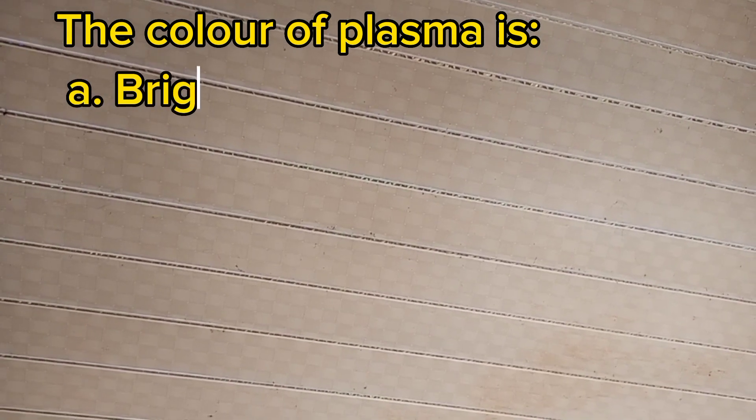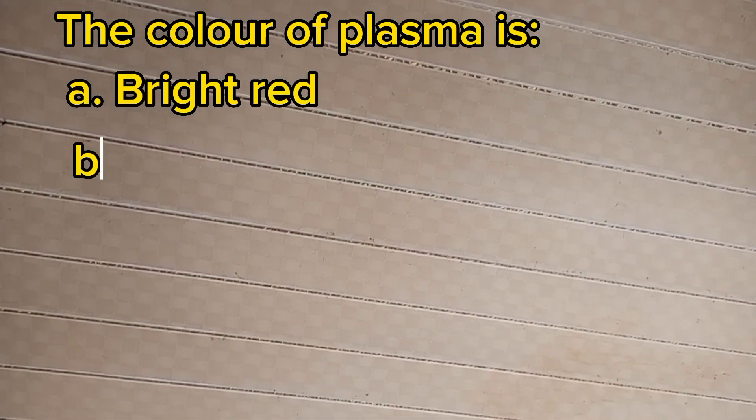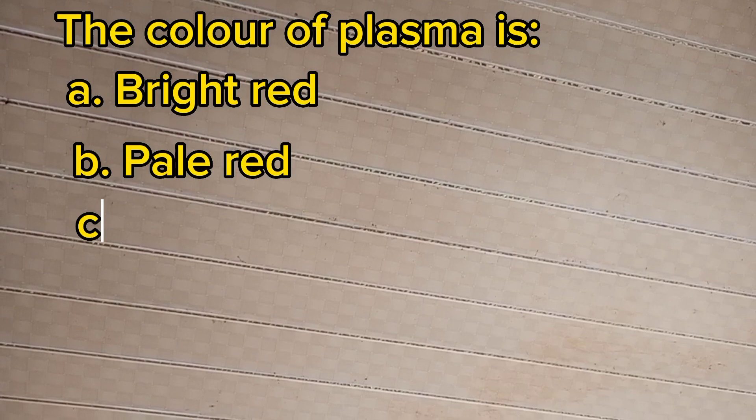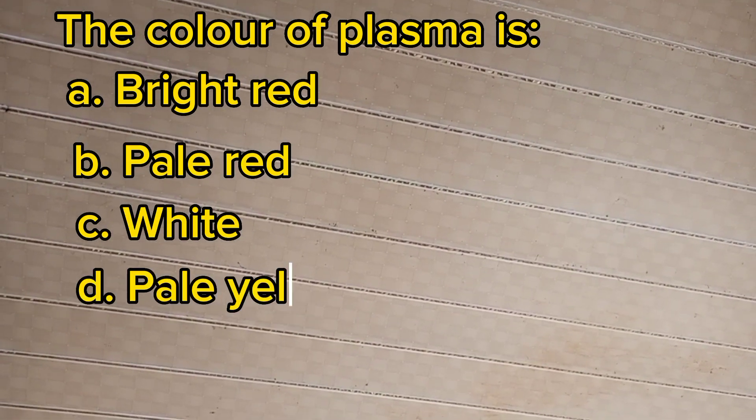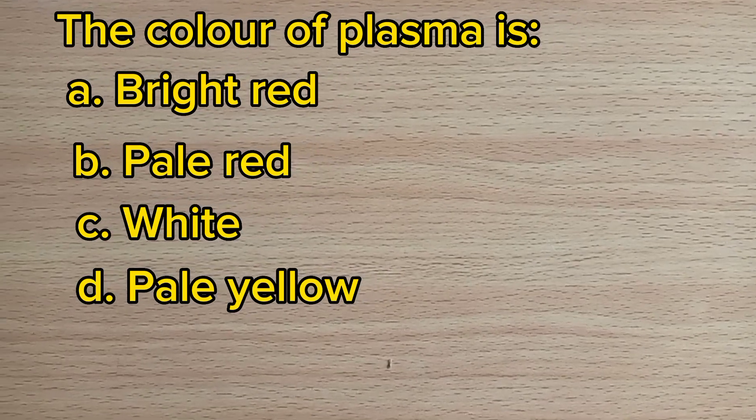Number seven: The color of plasma is: A. Bright red, B. Pale red, C. White, D. Pale yellow. The answer is D, pale yellow.